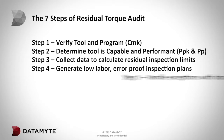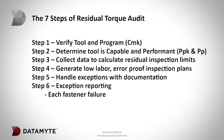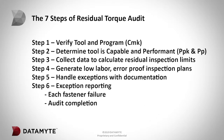Step 5: Handle inspections on an individual basis with documentation. Step 6: Exception reporting in two forms — number one, report on each individual fastener failure, and number two, report on audit completion.